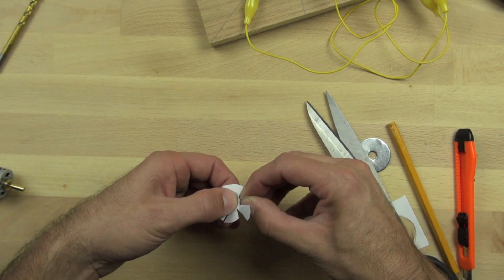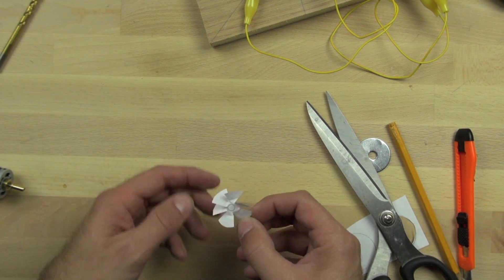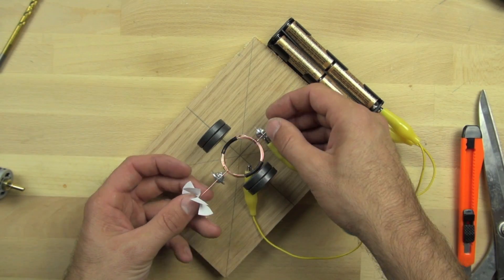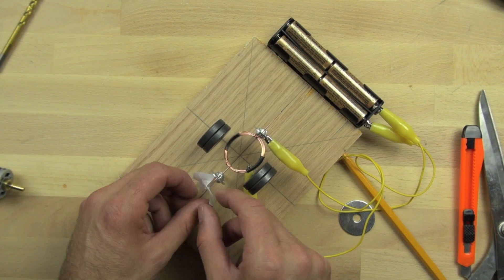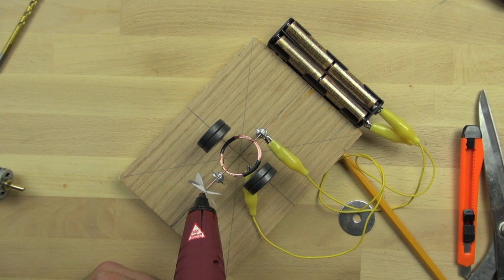So we're just twisting each of the vanes on the fan so that they are, each of the blades I should say, on the fan so that they look more like a real fan. And we're going to push that through the end of our coil. We're going to just put a little bit of hot glue on that to hold it in place.